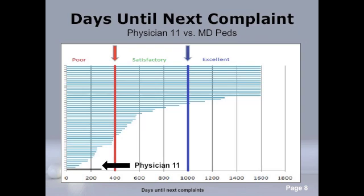Using the benchmark data and the results for Physician 11, we compared Physician 11's performance to the Maryland Pediatrics market segment with respect to days until next complaint. For those physicians with days until next complaint under 400, we assigned a score of poor performance. Between 400 and 1,000, we assigned satisfactory performance, and above 1,000, excellent performance. Physicians who received no complaint during the entire survey time were assigned a maximum value of 1,597 days, the highest observed score. As you can see, Physician 11 is scoring poorly as compared to other Maryland Pediatrics.